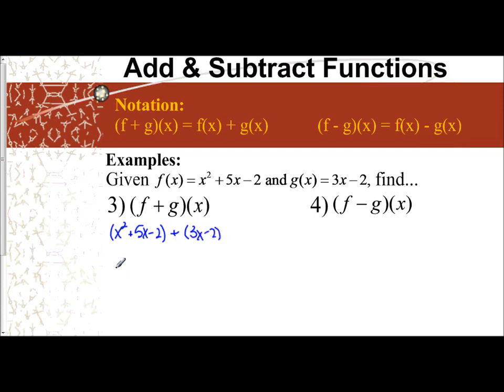If I just combine like terms here, x squared, I have 5x plus 3x, which is 8x. And I have negative 2 plus negative 2, which is negative 4. So there's combining like terms. Final answer being x squared plus 8x minus 4.